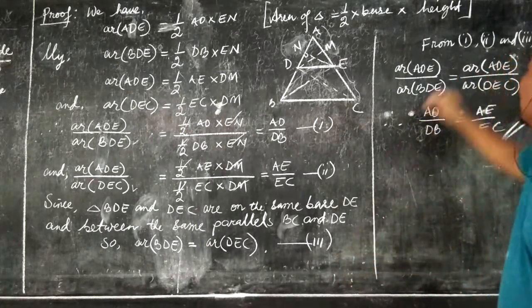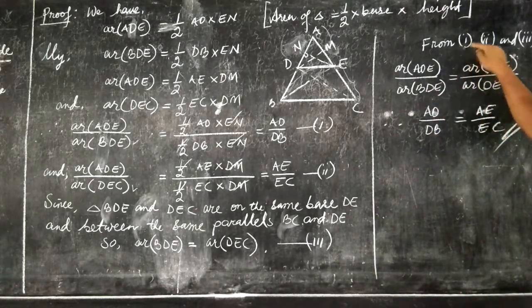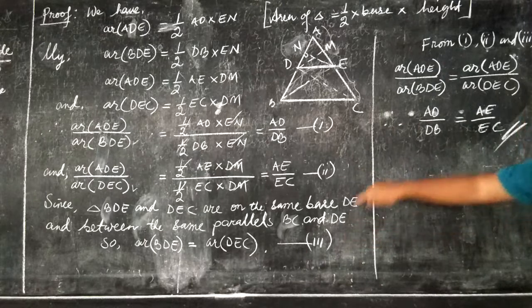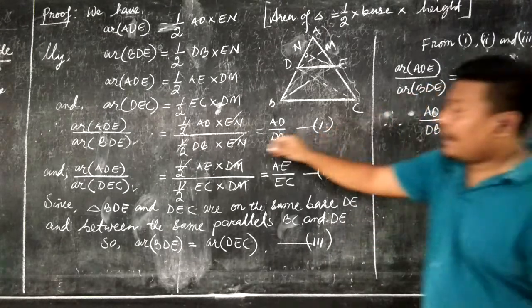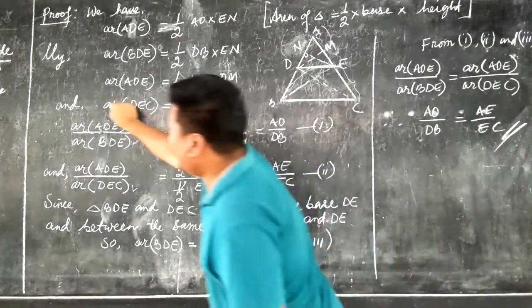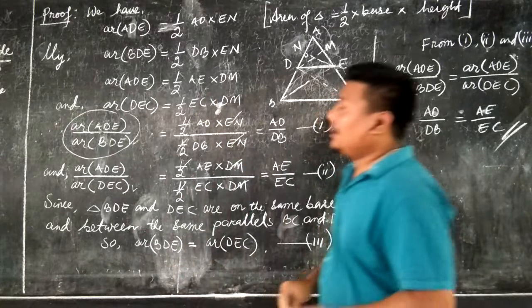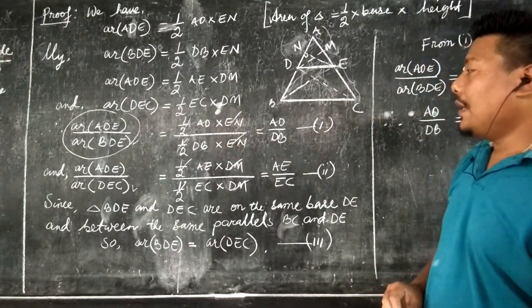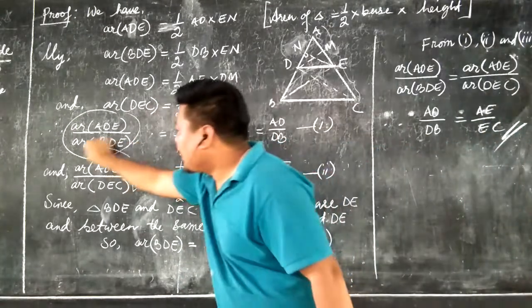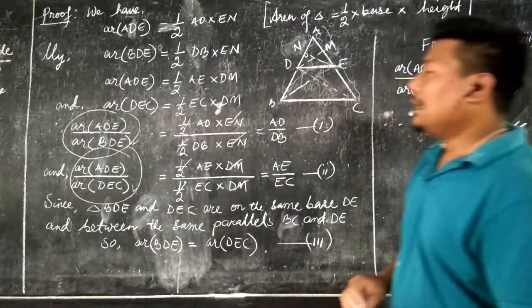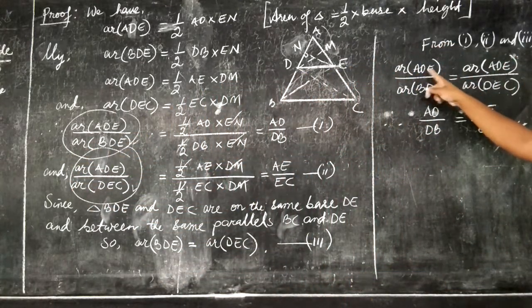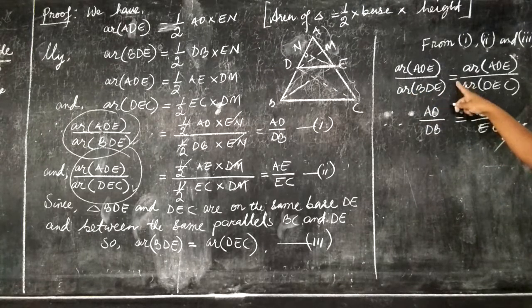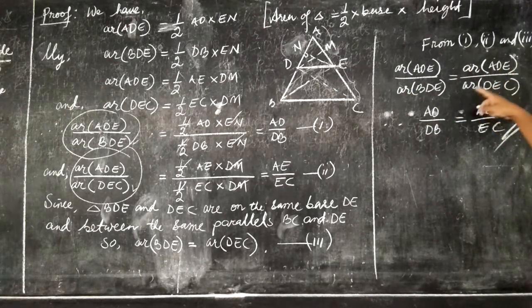By taking Equations 1, 2, and 3 together, we can say that area of triangle ADE by area of triangle BDE is equal to area of triangle ADE by area of triangle DEC. That means area of triangle ADE divided by area of triangle BDE equals area of triangle ADE divided by area of triangle DEC, which gives us AD by DB is equal to AE by EC.